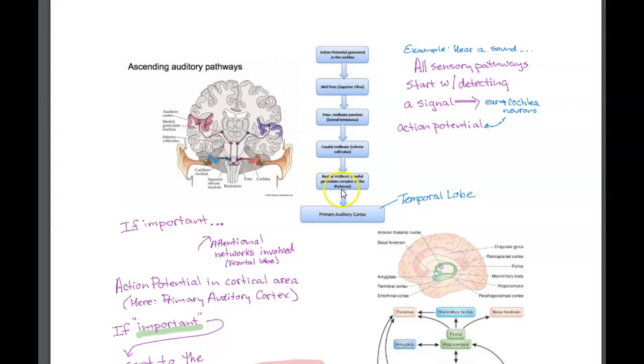Then we go into the inferior colliculus, if you remember what those little hill-like structures were when we looked at the sheep brain, and then we go to something called the medial geniculate, which is in the thalamus. Remember, a lot of things go through the thalamus, and then we eventually go to the primary auditory cortex, which is in the temporal lobe. This is where the part of our cortex is devoted to hearing and sounds.